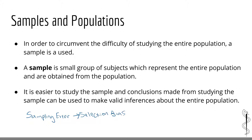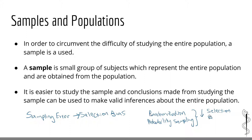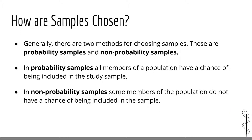Selection bias happens all the time in health research, and for that reason many techniques have been developed to decrease the risk of selection bias. In this chapter, we will talk about two techniques for decreasing the risk of selection bias. Let's start with sampling.